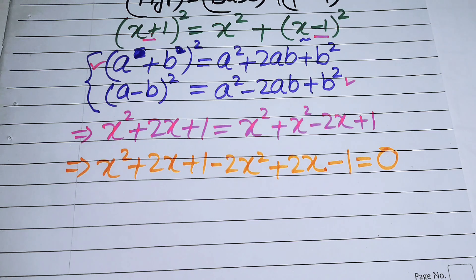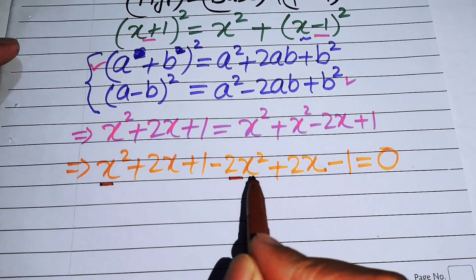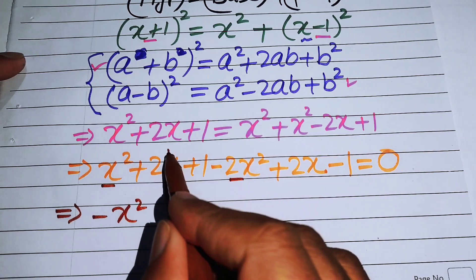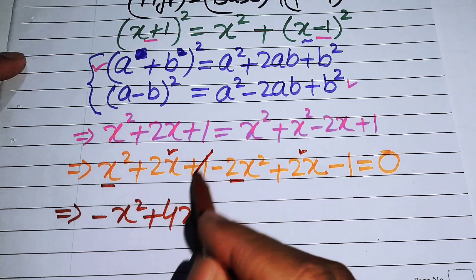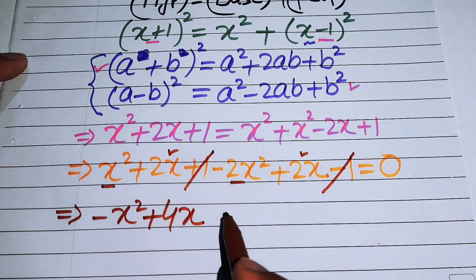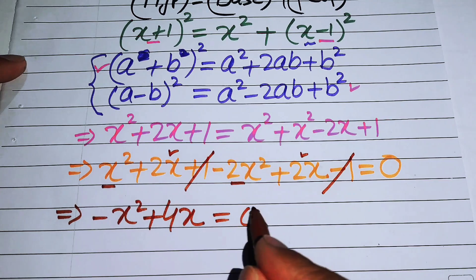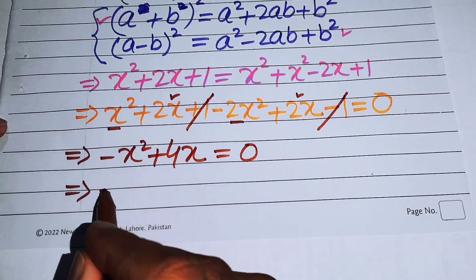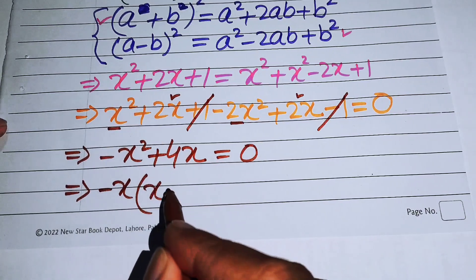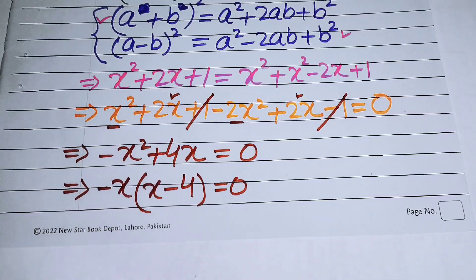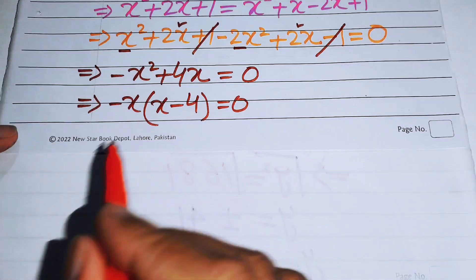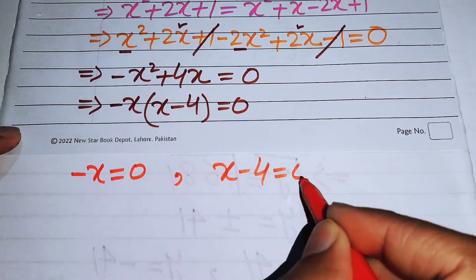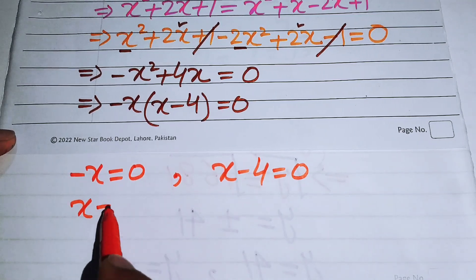Combining like terms: X² minus 2X² gives minus X², and 2X plus 2X gives 4X, while +1 and −1 cancel. This simplifies to −X² + 4X = 0. Factoring out −X gives us −X(X − 4) = 0, yielding two cases: X = 0 or X − 4 = 0.